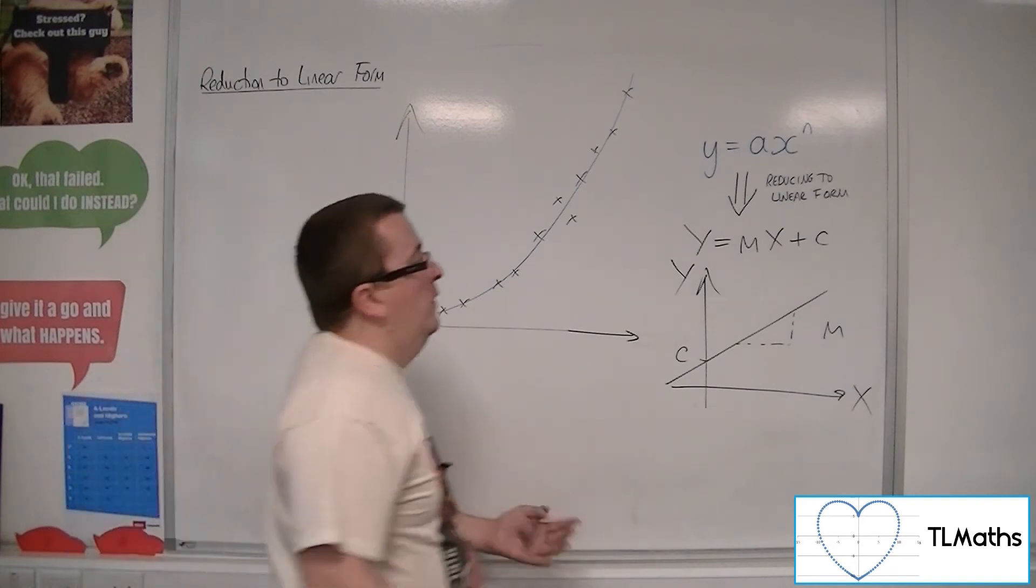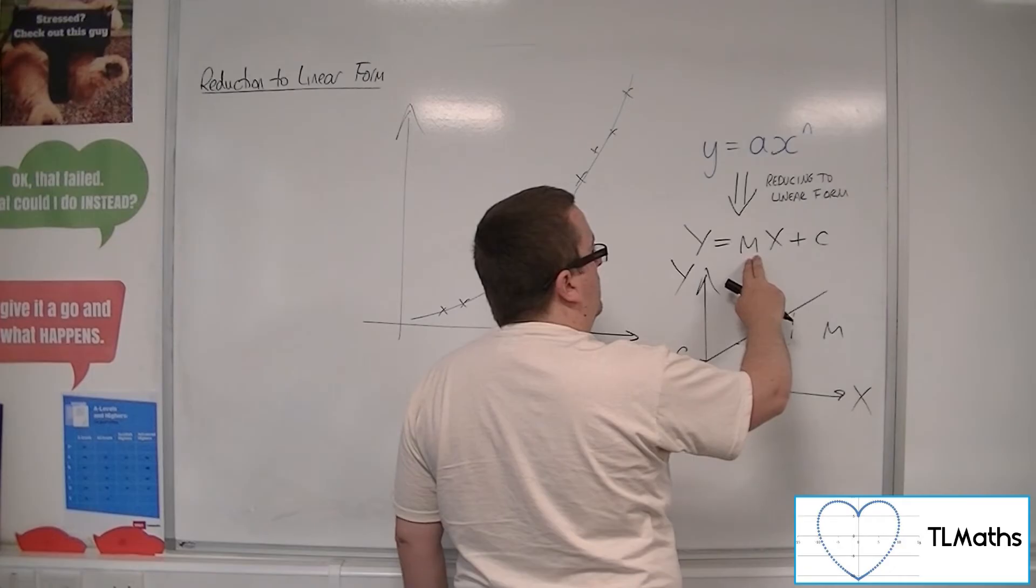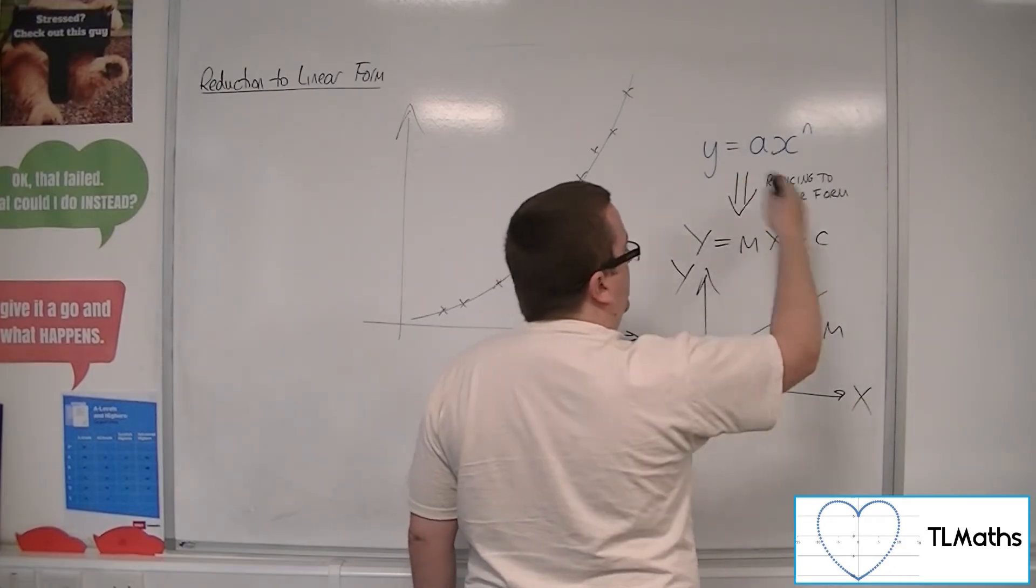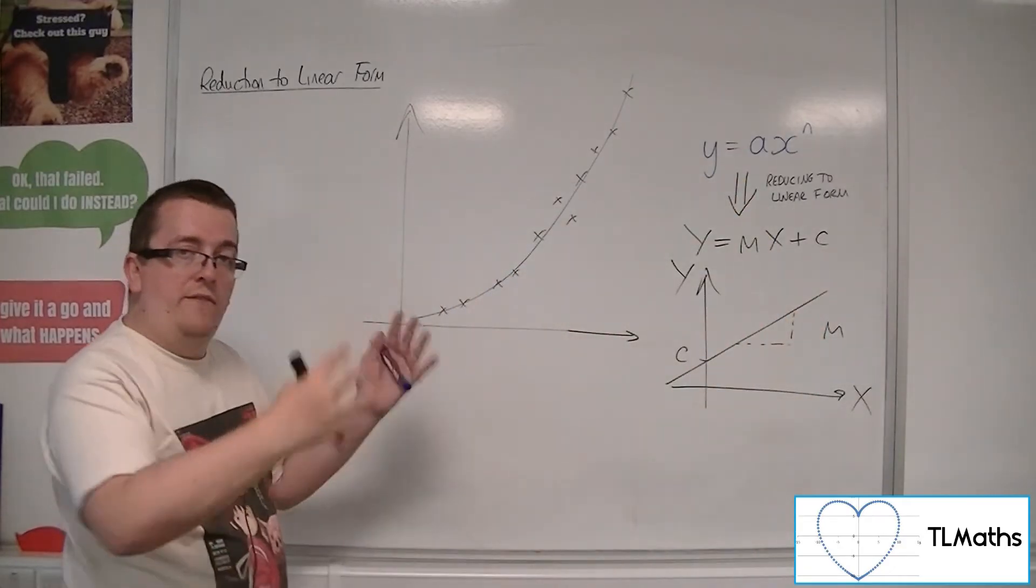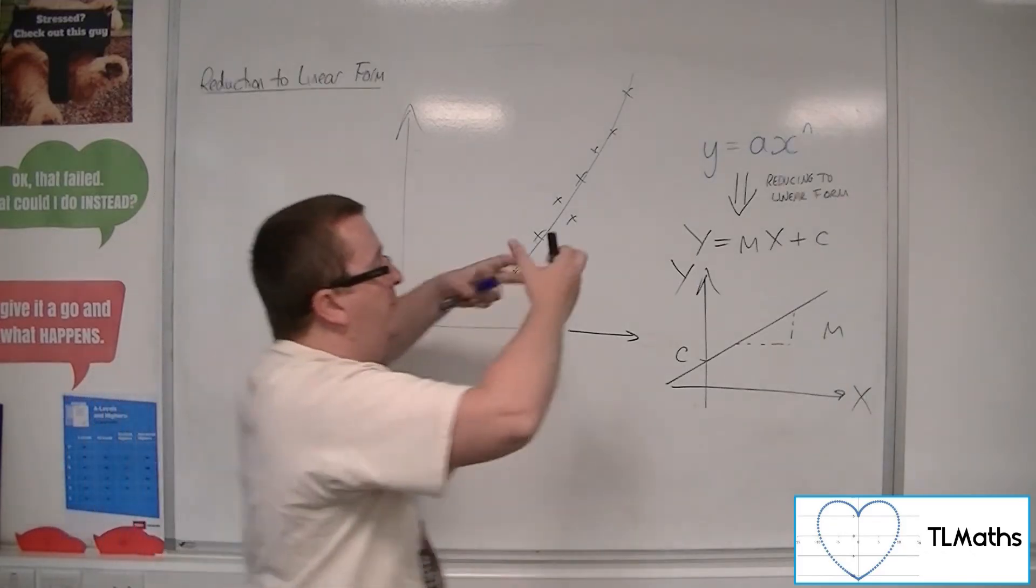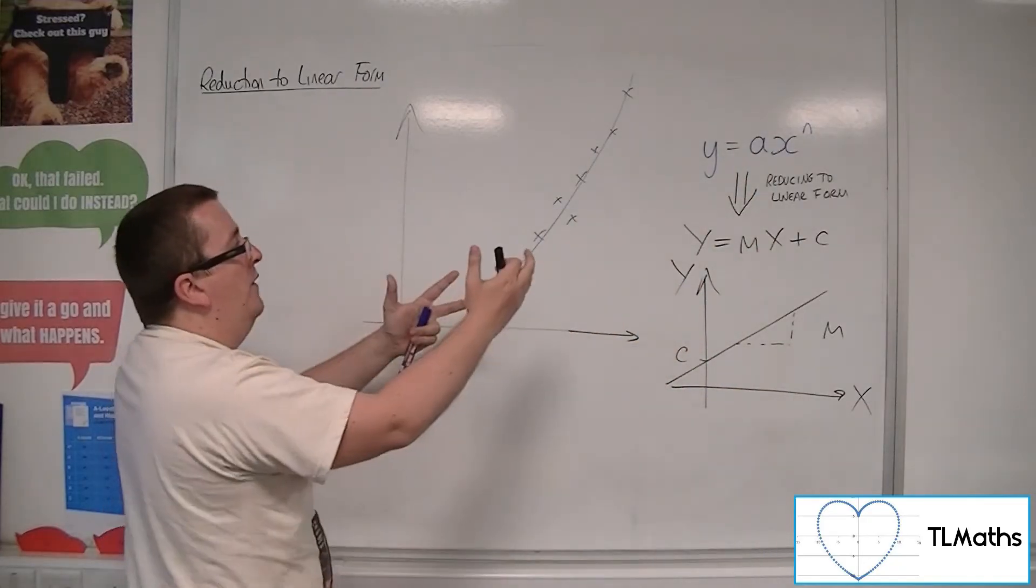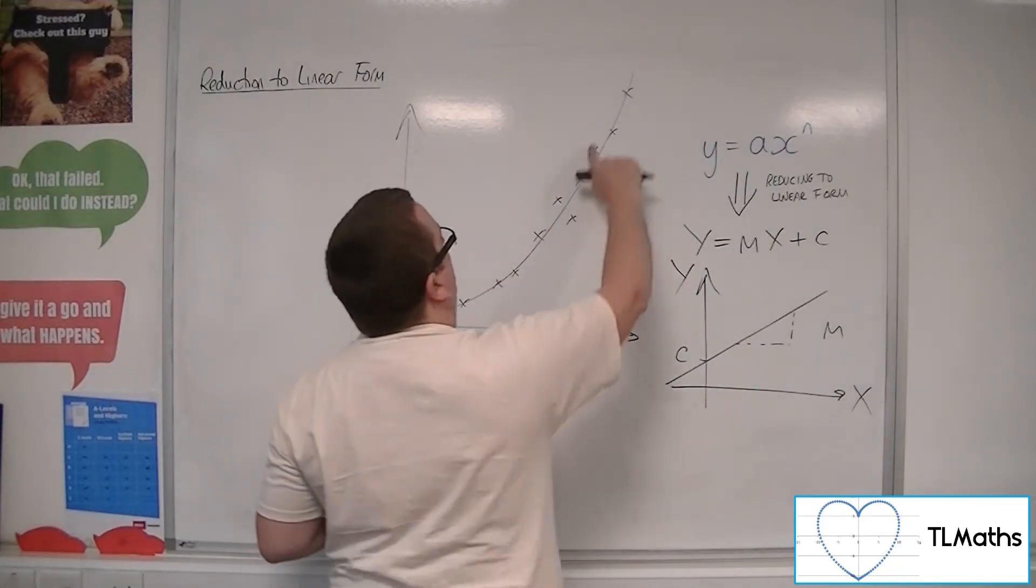And then if we could write a in terms of m, or rather m in terms of a and c in terms of n or whatever, then we can work backwards to figure out what a and n are. And that will then tell me the equation of this curve.